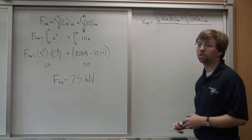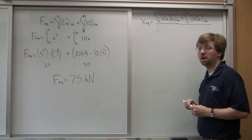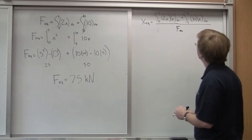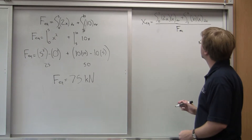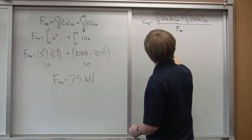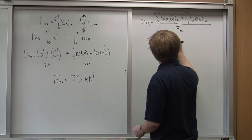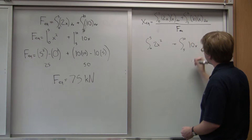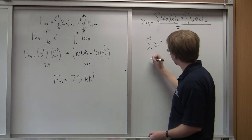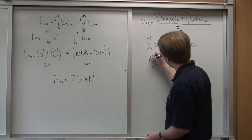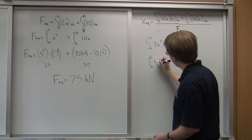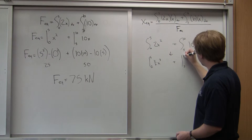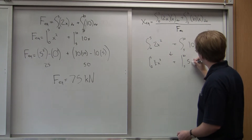That whole expression — those two integrals — is divided by the magnitude of the equivalent point load, F_eq. So I have the integral from zero to five of 2x squared, plus the integral from five to ten of 10x. Evaluating: from zero to five, this gives two-thirds x cubed; plus from five to ten, that gives five x squared.